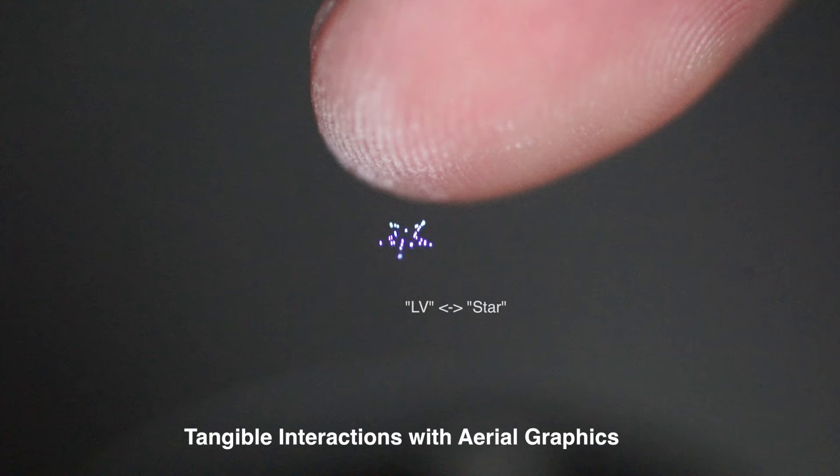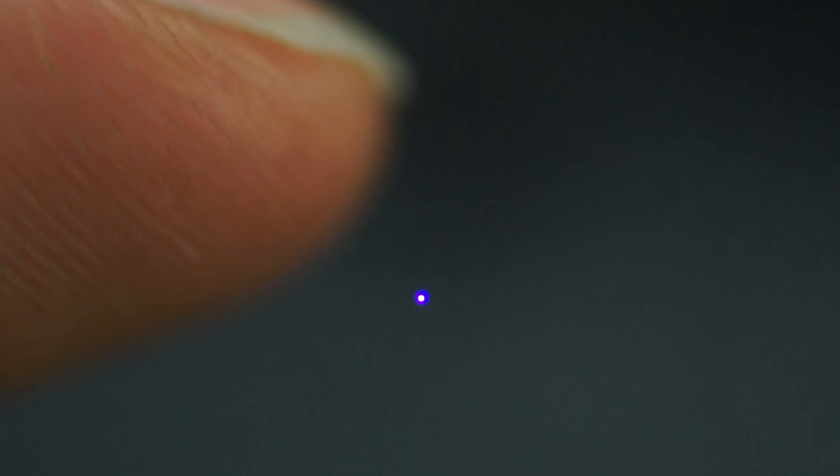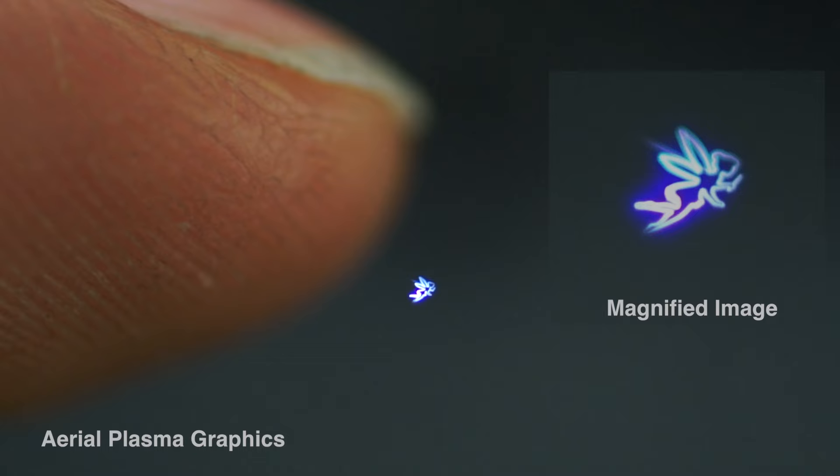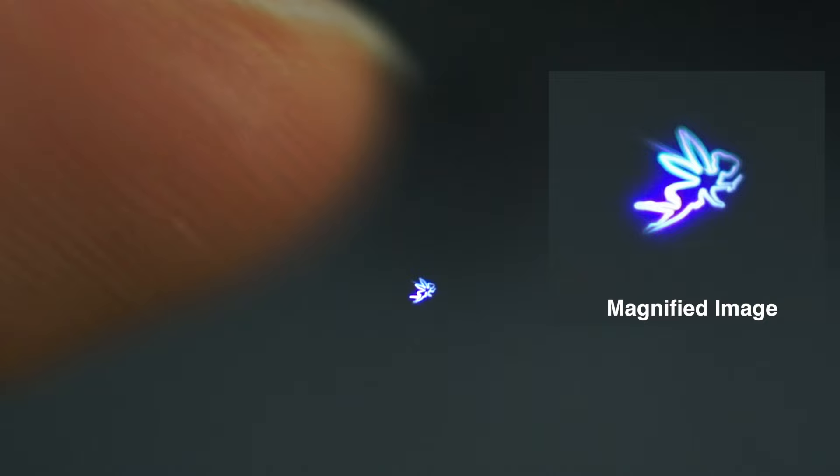We present a method to render aerial and volumetric graphics in air by femtosecond lasers. Laser-induced plasma emits light without involving any physical matter. Daily life applications can be explored because plasma induced by a femtosecond laser is quieter and safer than that by a nanosecond laser.